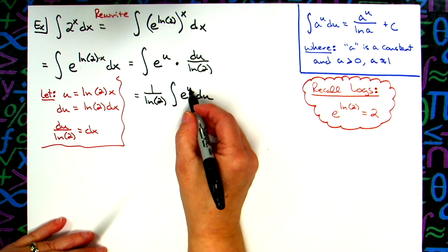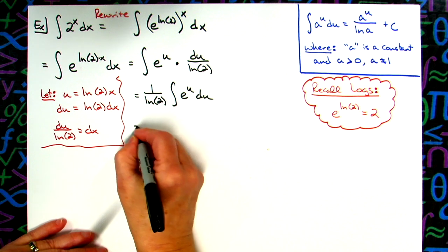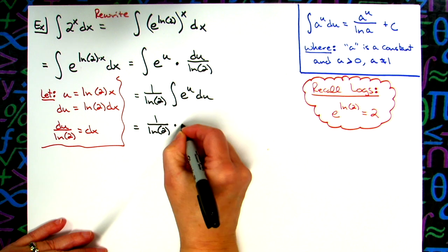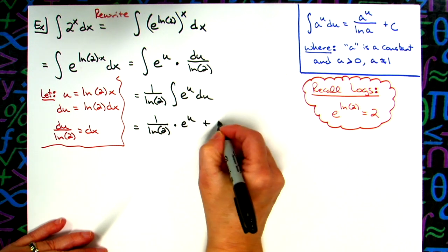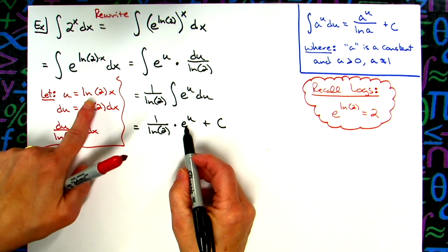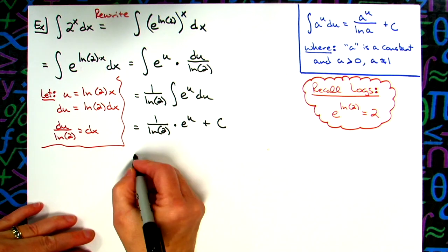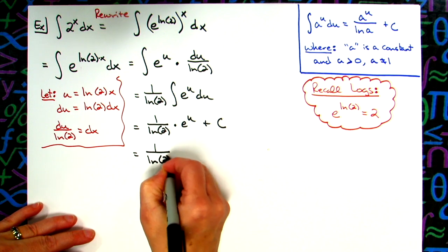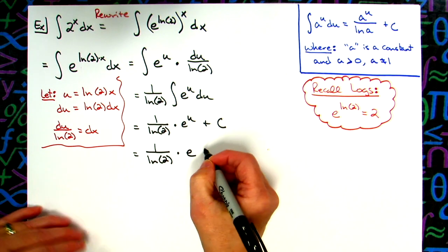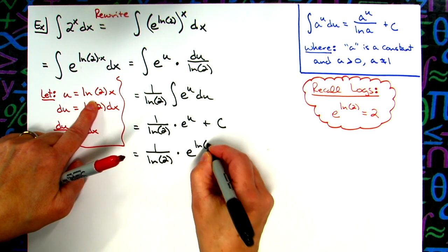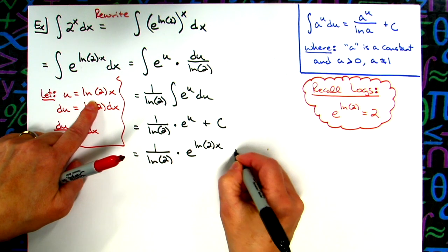Now I'm totally down to an integral I can integrate. When we integrate e to the u, we get e to the u, so this integrates as 1 over natural log of 2 times e to the u, and then of course our plus C on the end. Now I'm going to replace u with what we originally said it equals, so I'm going to have a 1 over natural log of 2, replace that e there, raised to the natural log of 2 times x.